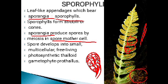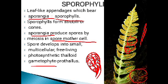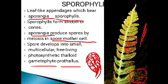The haploid spores are released and fall onto a suitable substratum. Where moisture or water content is present, they germinate and develop into the gametophytic generation. This gametophytic generation is called the prothallus, which is the gametophytic generation of pteridophytes.